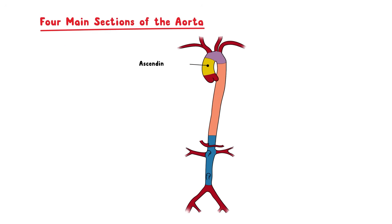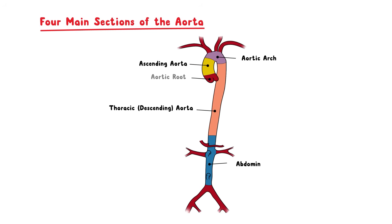The aorta can be divided into four sections: the ascending aorta, the aortic arch, the thoracic or descending aorta, and the abdominal aorta. The aorta terminates by bifurcating into the left and right common iliac arteries.